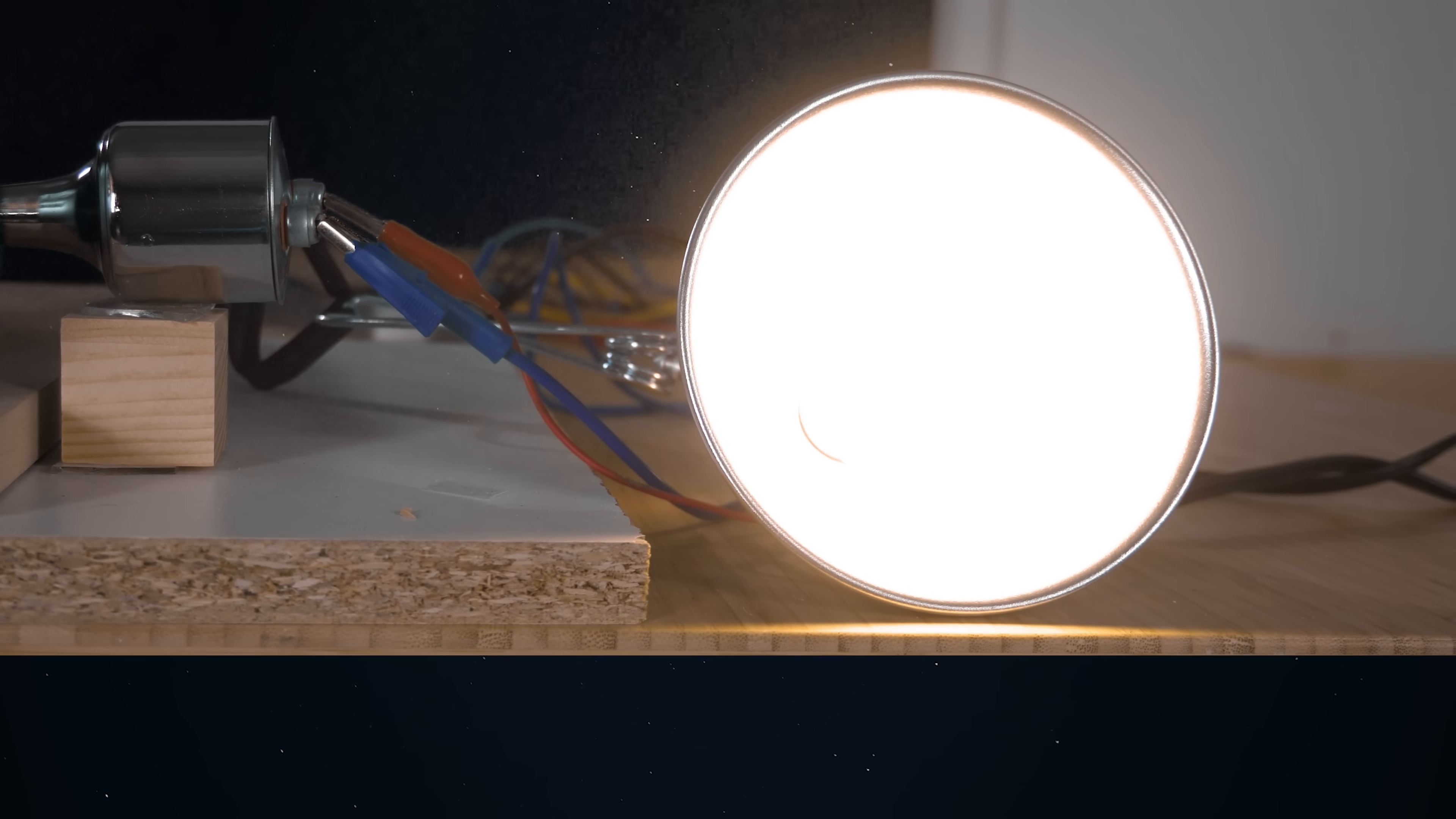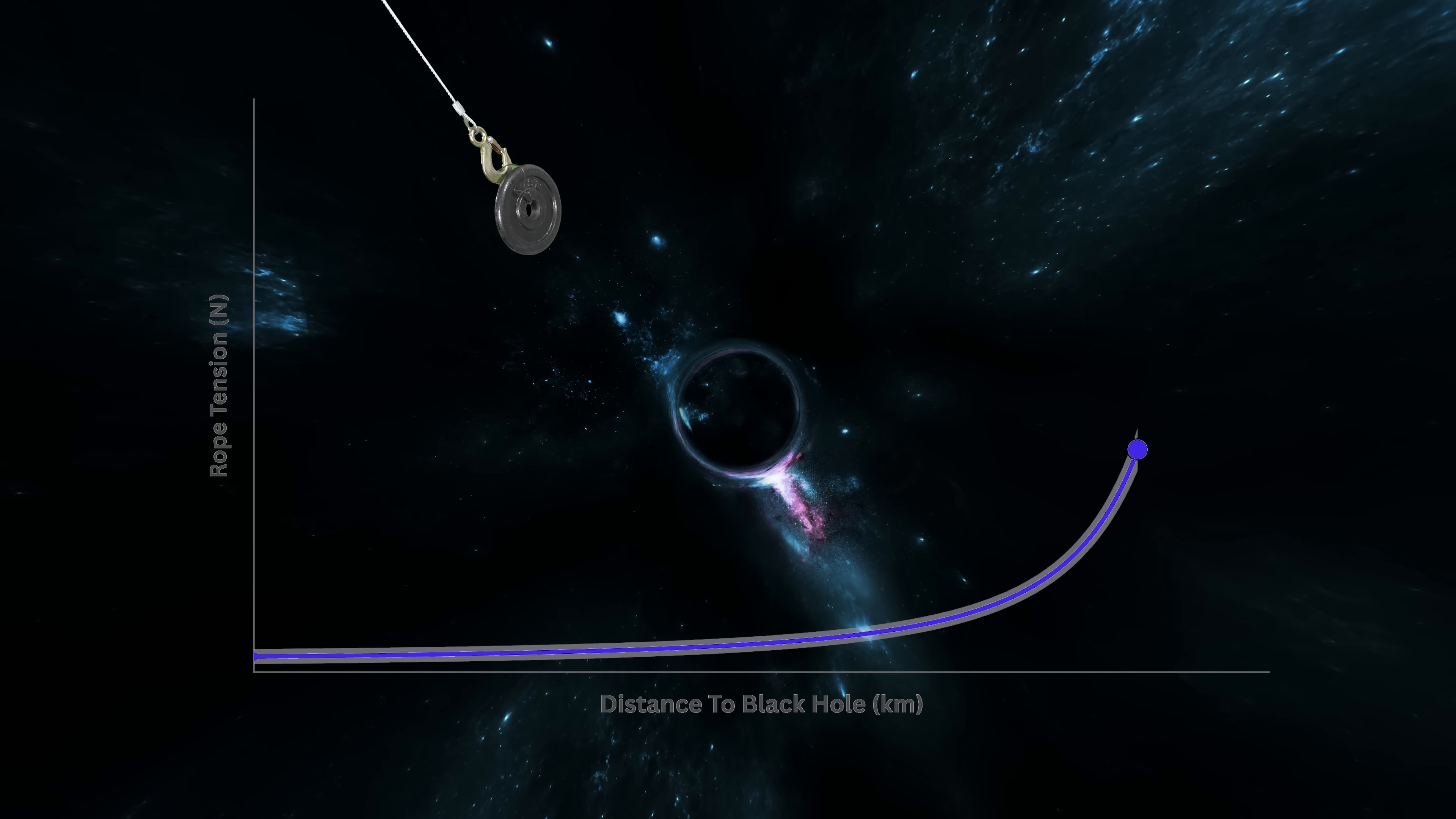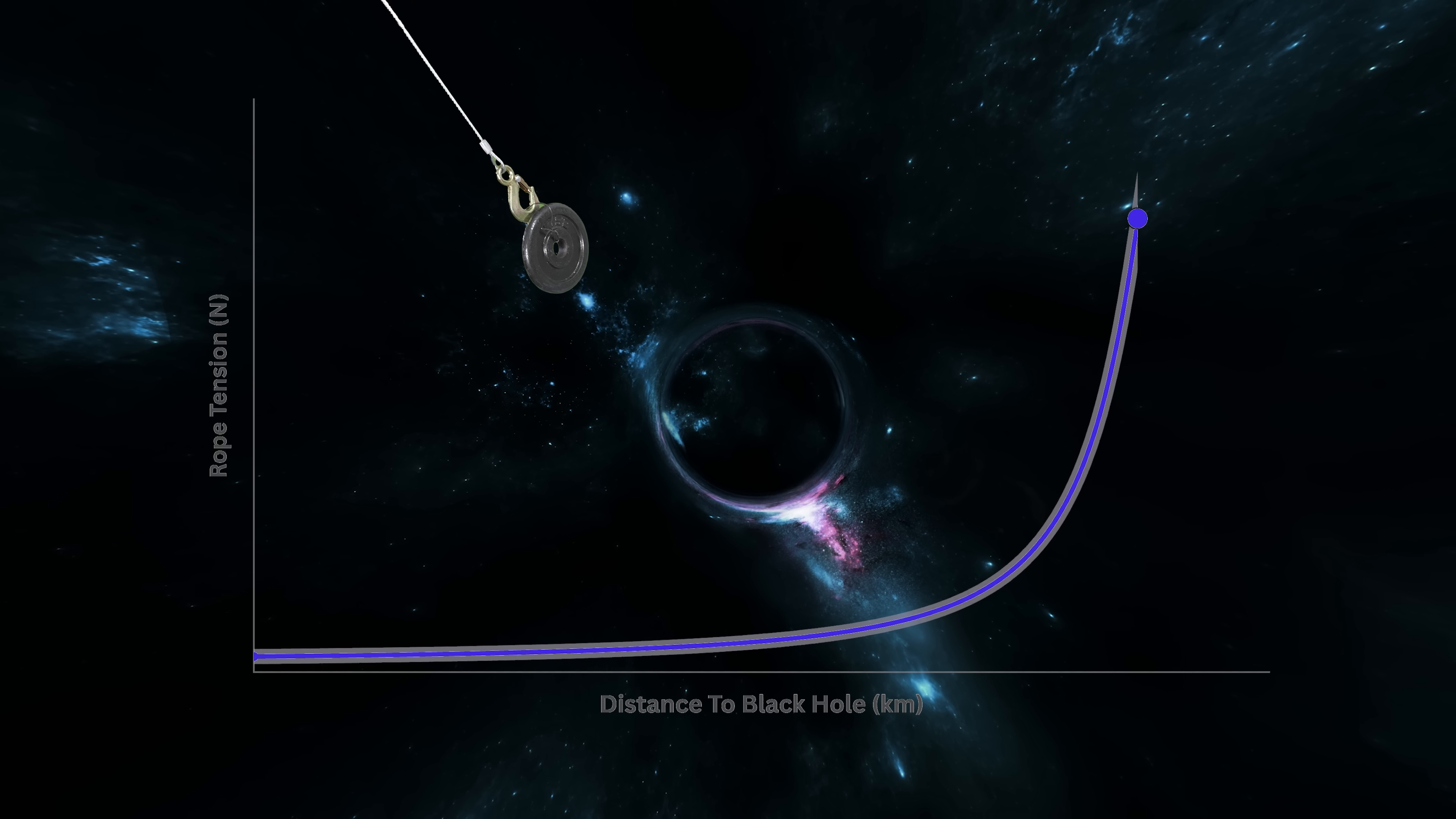As I lower it into the black hole, the gravity's getting stronger and stronger, so it's pulling my weight harder and harder. And the energy I'm getting out just keeps increasing, but then it starts decreasing.